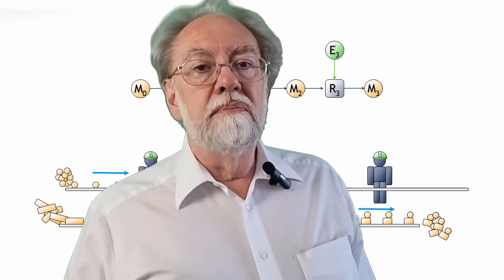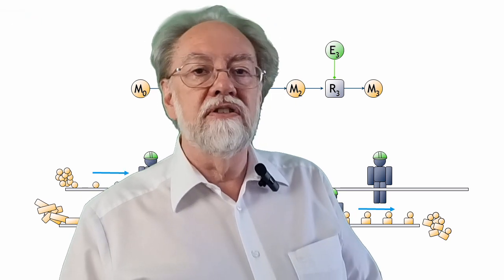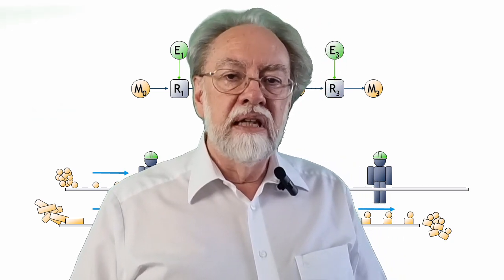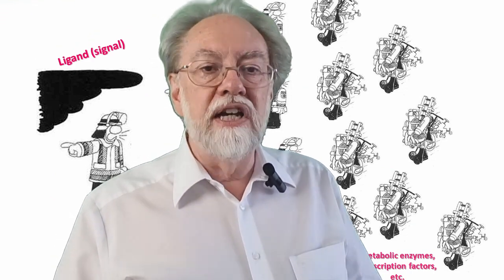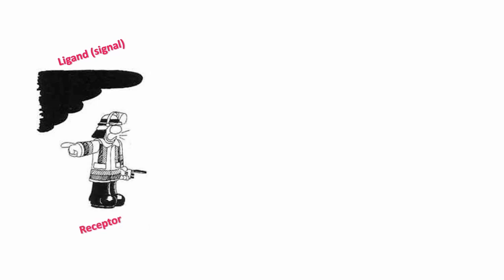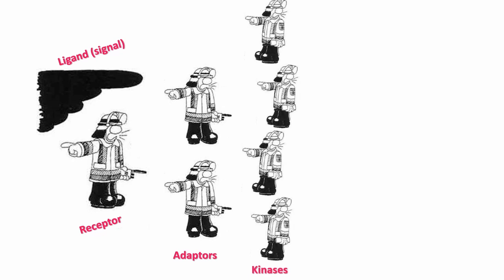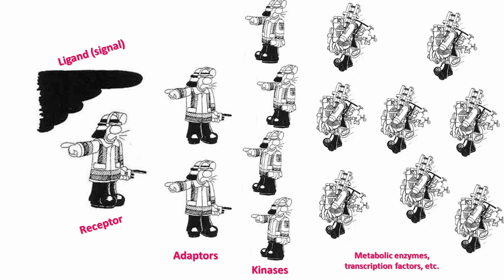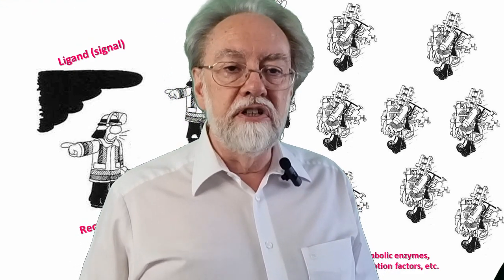You can compare the metabolic path with a production line, where each worker long a row adds, removes or modifies something of a work part. A signaling pathway works differently. It's more like a chain of command. It starts with an external smoke signal which is recognized by a receptor. The receptor may interact with a number of adapters, which activate a chain of kinases. And at the end of the chain of command, of course, you have the poor guys who have to do the real work. Metabolic enzymes to regulate the metabolism of a cell, transcription factors to regulate gene expression programs, structural proteins, etc.